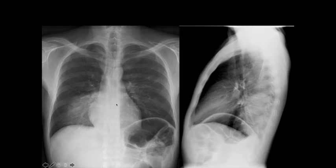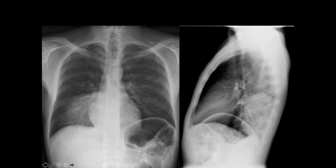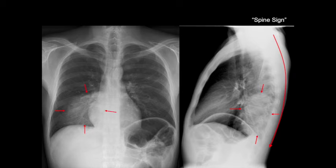Here's another case. Going through our approach — heart, mediastinum, comparing both sides — you notice this cloud-like fluffy opacity on the right. On the lateral, the retrosternal airspace is clear, retrocardiac airspace is clear. The spine sign — instead of getting darker as you go inferiorly, there is clearly something abnormal there. The spine sign is abnormal, suggesting airspace disease in the right lower lobe.